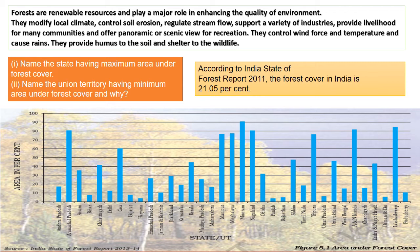I request you to study table 5.1 in your book, which shows the area under forest cover, and find out the answers to questions like: which state has the maximum area under forest cover, and which union territory has the minimum area under forest cover. An important fact you should know: according to the India State of Forest Report 2011, the forest cover in India is 21.05 percent.